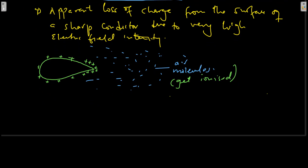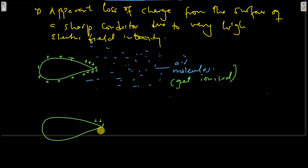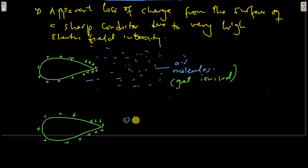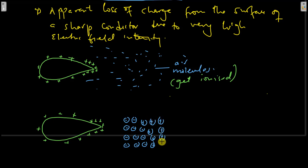So, in this case, our sharp conductor, because of the high electric field intensity at the sharp points, the air molecules will get ionized. Instead of having air molecules here, the air molecules have become ionized. We have a stream of positive and negative charges.